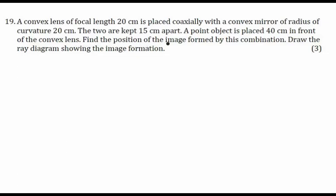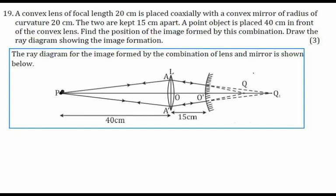Find the position of the image formed by this combination and draw the ray diagram showing the image formation. First, refraction will happen through the lens, then the rays will fall on the mirror, and using the property of reflection we find where the image is formed. The distance is 15 centimeters between the convex mirror and the convex lens, and the object distance is 40 centimeters from the convex lens.